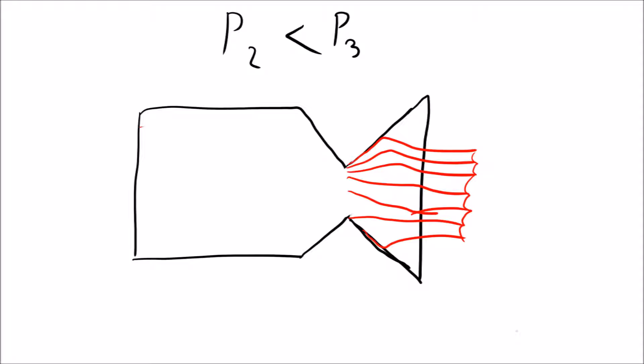As a result, we have expansion waves within the nozzle where the exhaust separates from the wall. This separation increases thrust slightly because it allows the exhaust velocity to increase, so it is sometimes desirable.